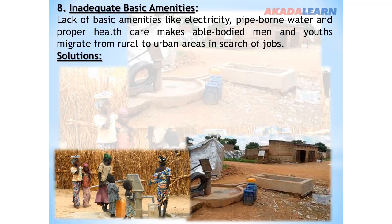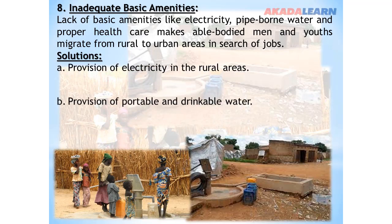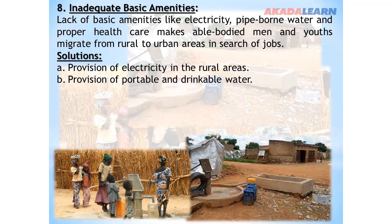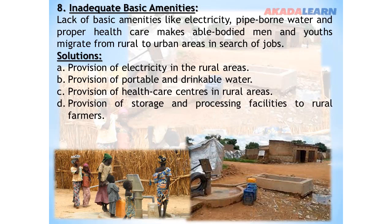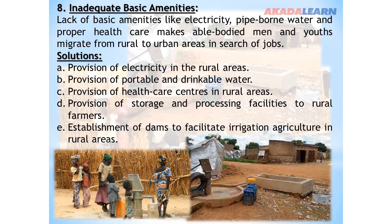Solutions: Provision of electricity in rural areas, provision of portable and drinkable water, provision of healthcare centers in rural areas, provision of storage and processing facilities to rural farmers, and establishment of dams to facilitate irrigation agriculture in rural areas.